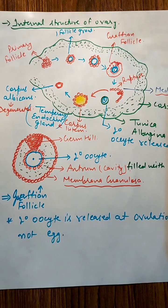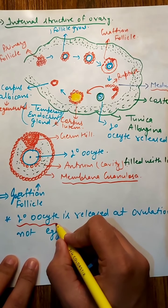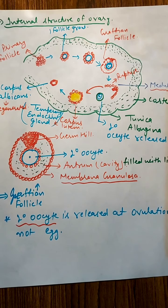The secondary oocyte is released during the time of ovulation — keep this in mind. An egg is not released; the egg comes later, as it is converted after fertilization when a meiotic division occurs. But at the time of ovulation, secondary oocyte will be released. We commonly use the term 'egg,' but that is actually incorrect — secondary oocyte is released during the process of ovulation.